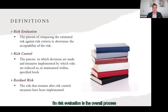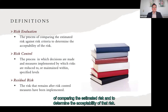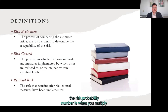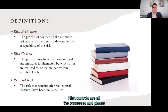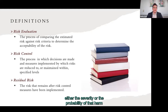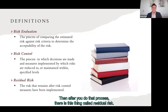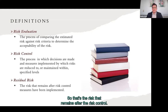Risk evaluation is the overall process of comparing the estimated risk against criteria to determine its acceptability. Once you calculate the RPN — the risk priority number — you determine whether it falls within your organization's defined framework of acceptability. Risk controls are all the processes and parts that define how you'll reduce either the severity or probability of harm. Residual risk is what's left after all risk controls have been applied — you then evaluate it again to confirm it's within the acceptable framework.